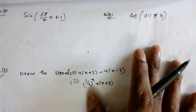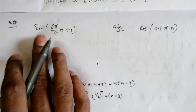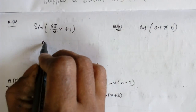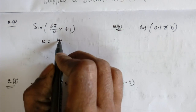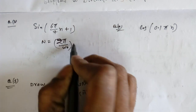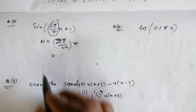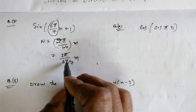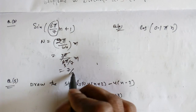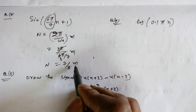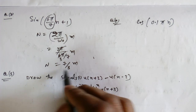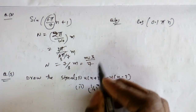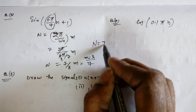That is the first question. Next, we will see sin(6π/7 · n + 1). If it is periodic, then what is the period? Again, N = (2π/ω₀)·m. Here ω₀ = 6π/7, so N = (2π/(6π/7))·m. The π's cancel, giving N = (7/3)·m.